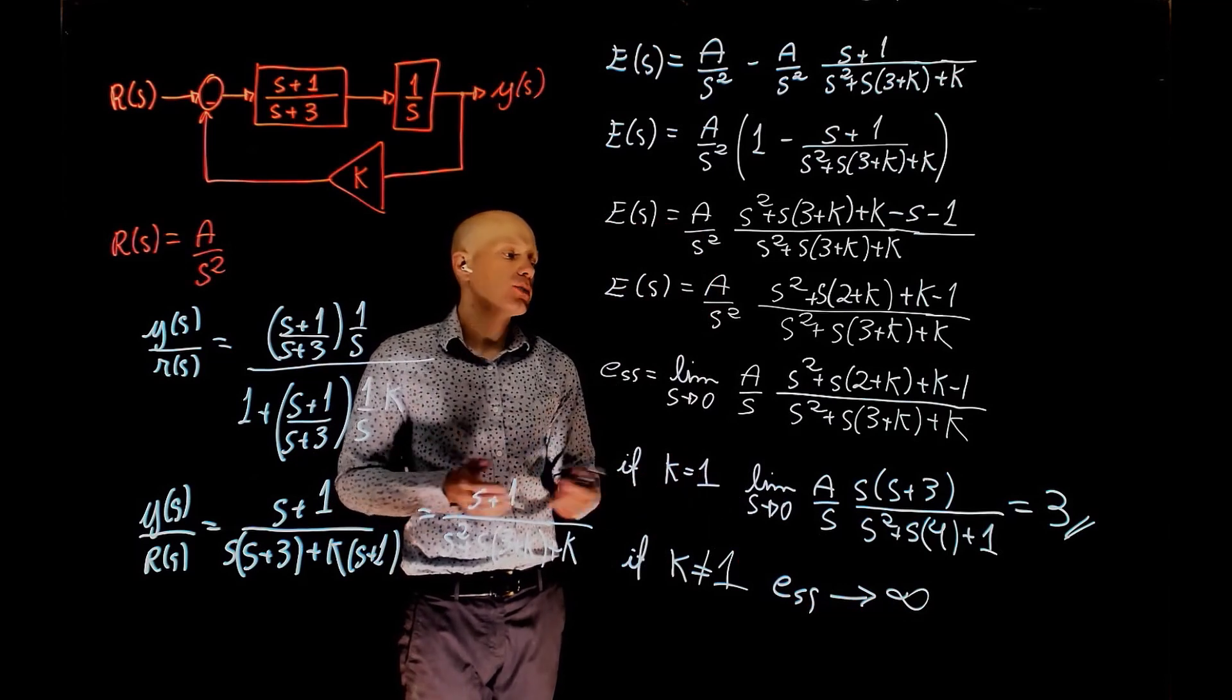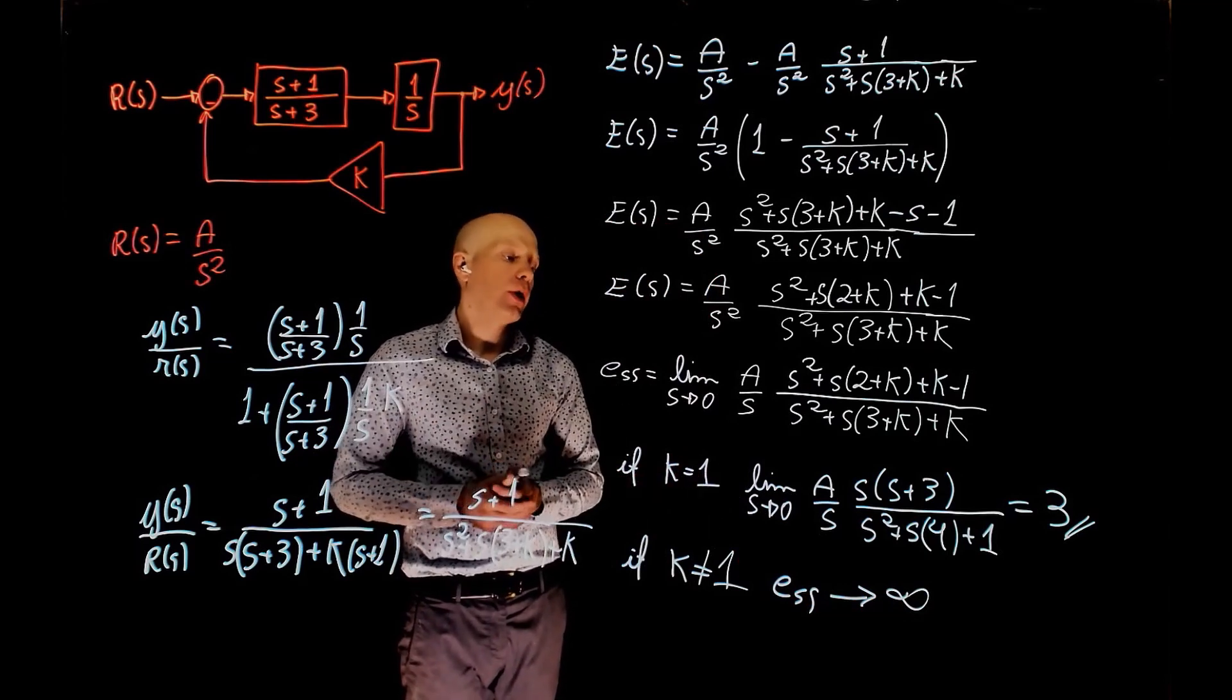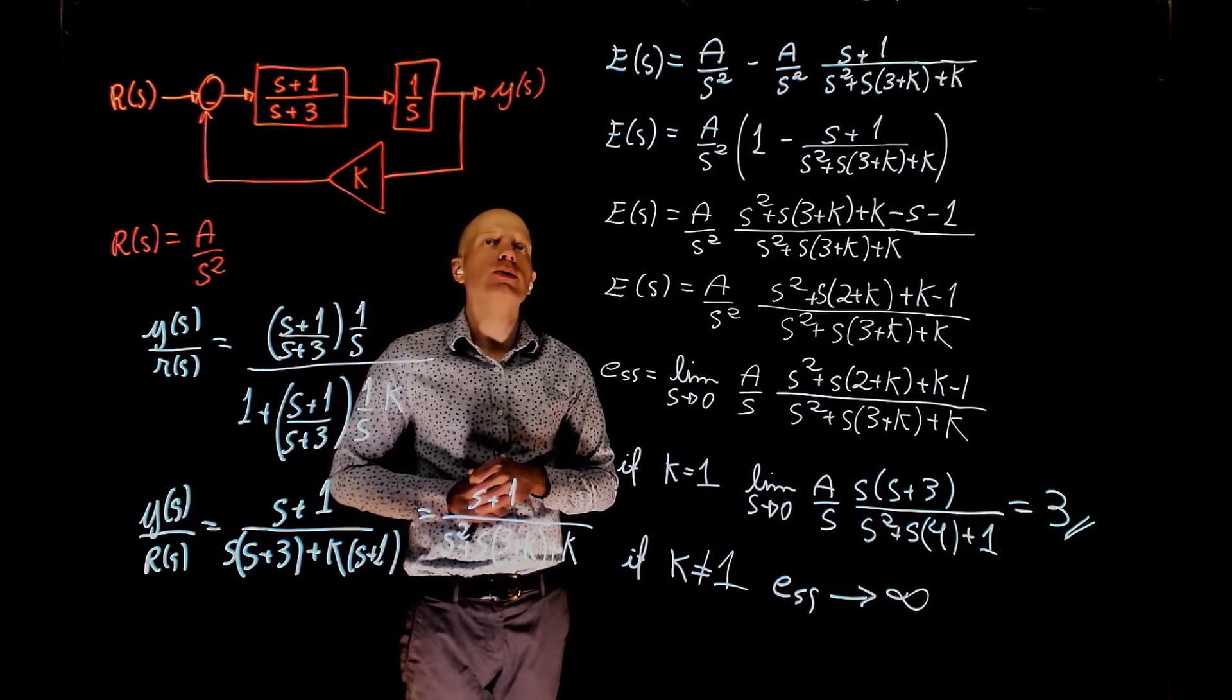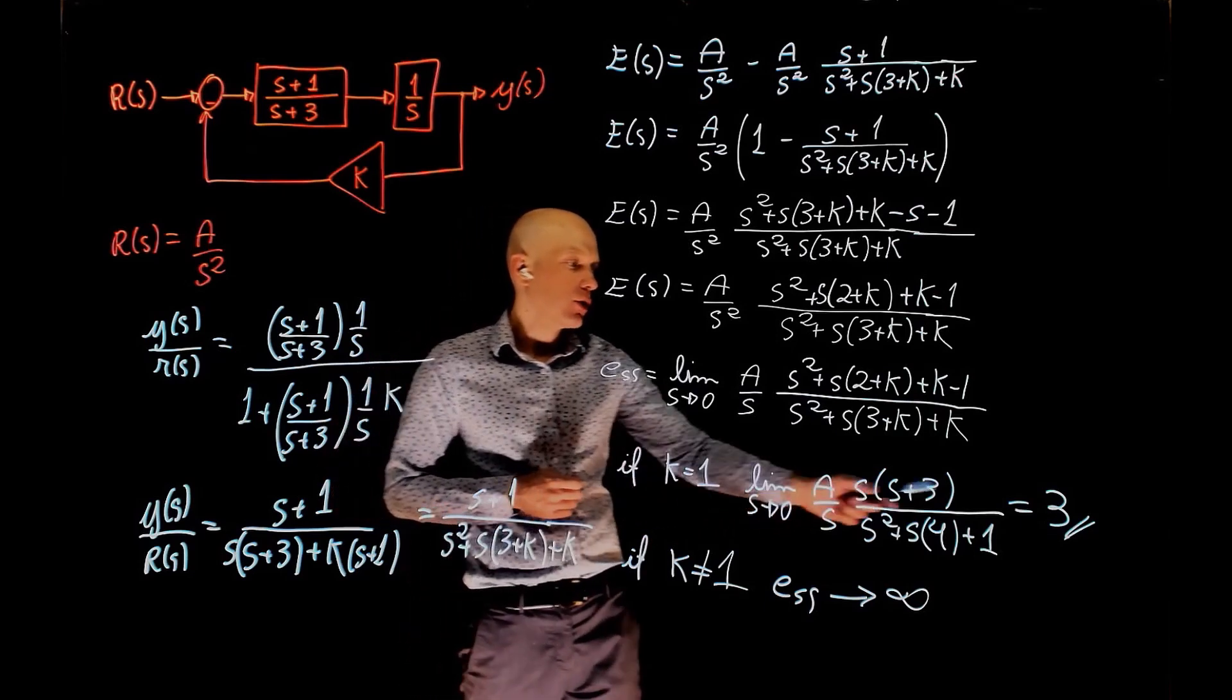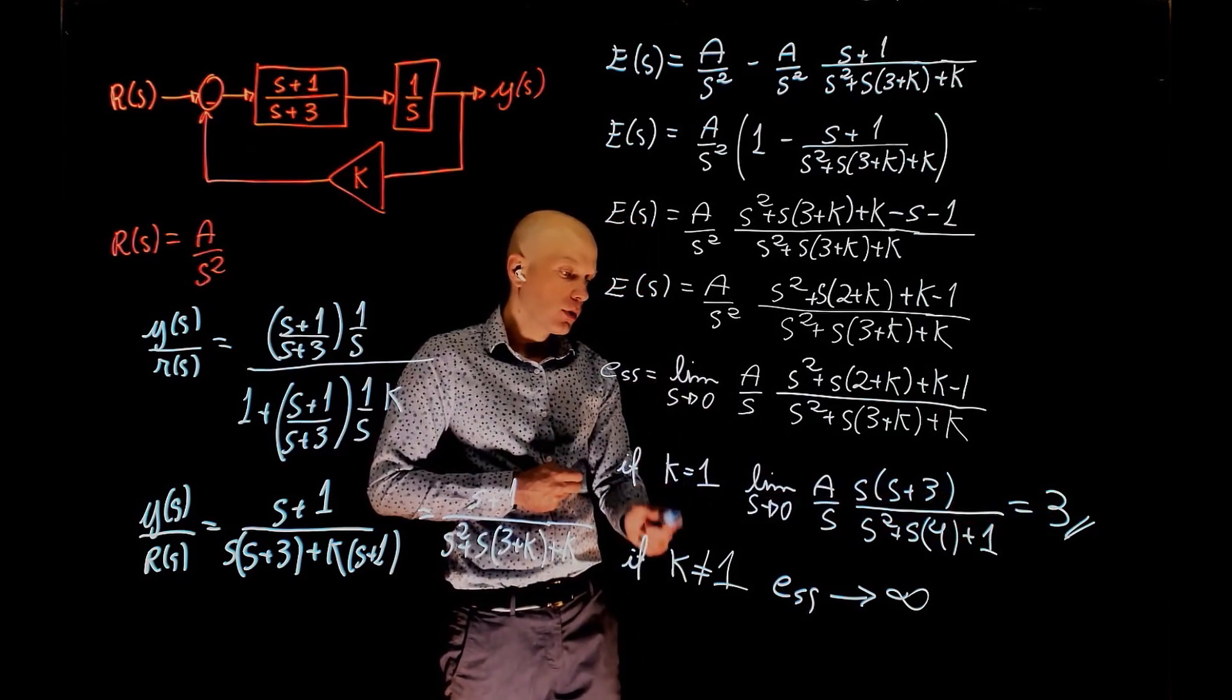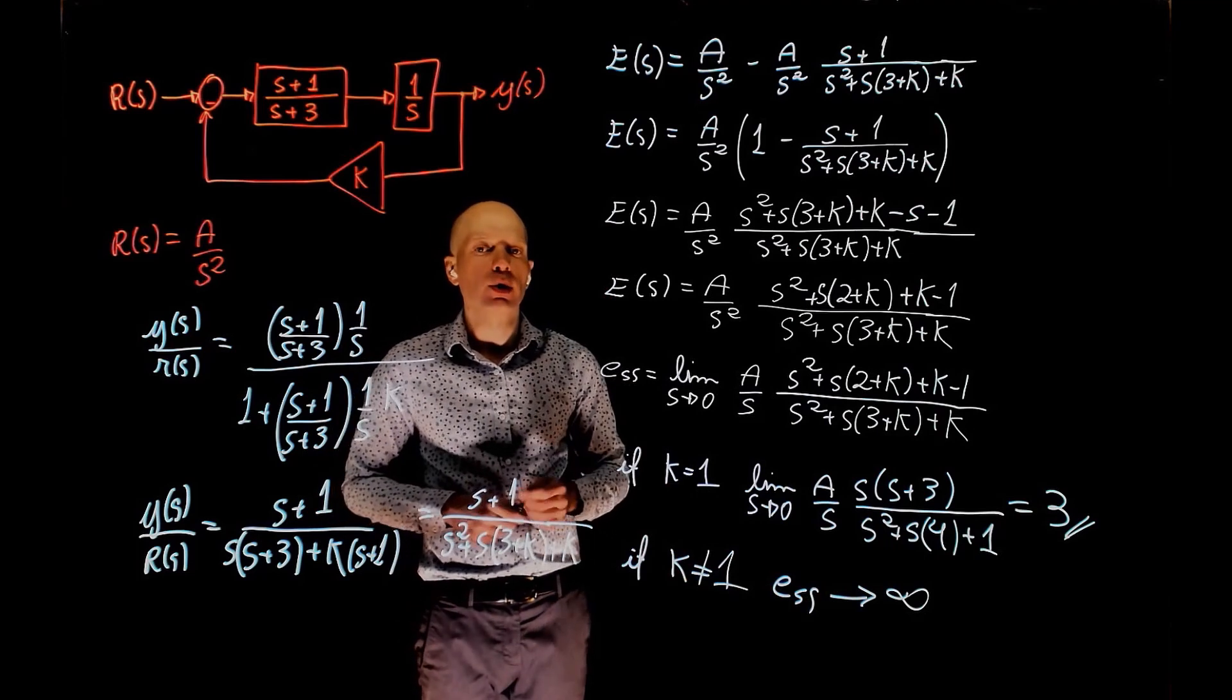From this analysis, we can conclude that the error will never go to 0. There is no suitable value of k that will make the steady state error go to 0. It either goes to 3 when k equals 1, or goes to infinity when k is different than 1.